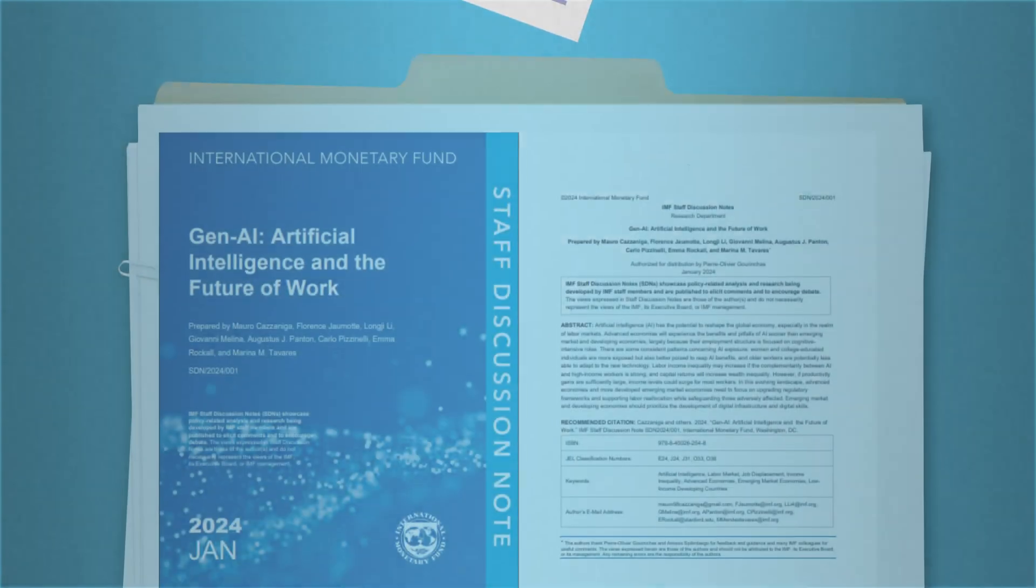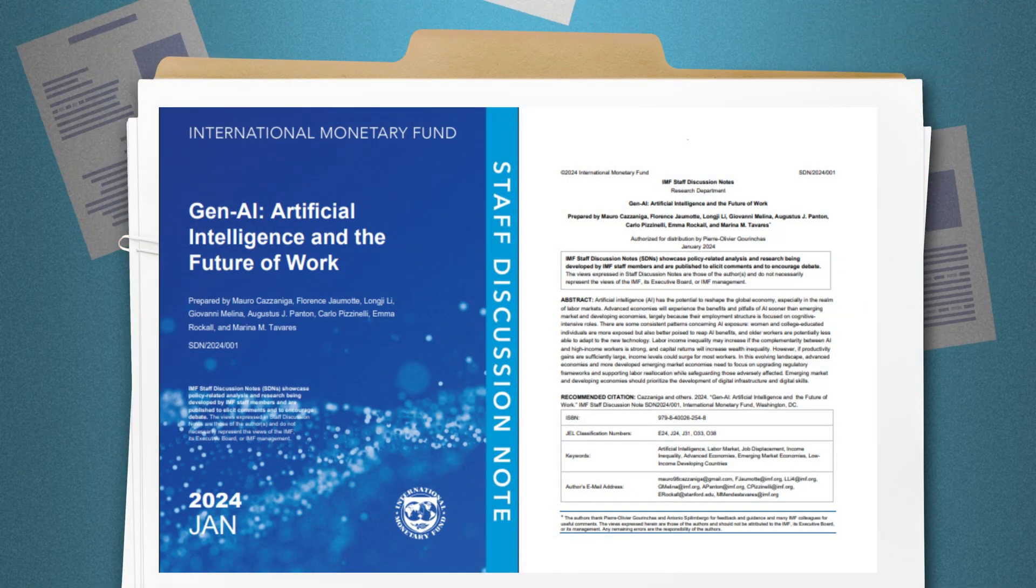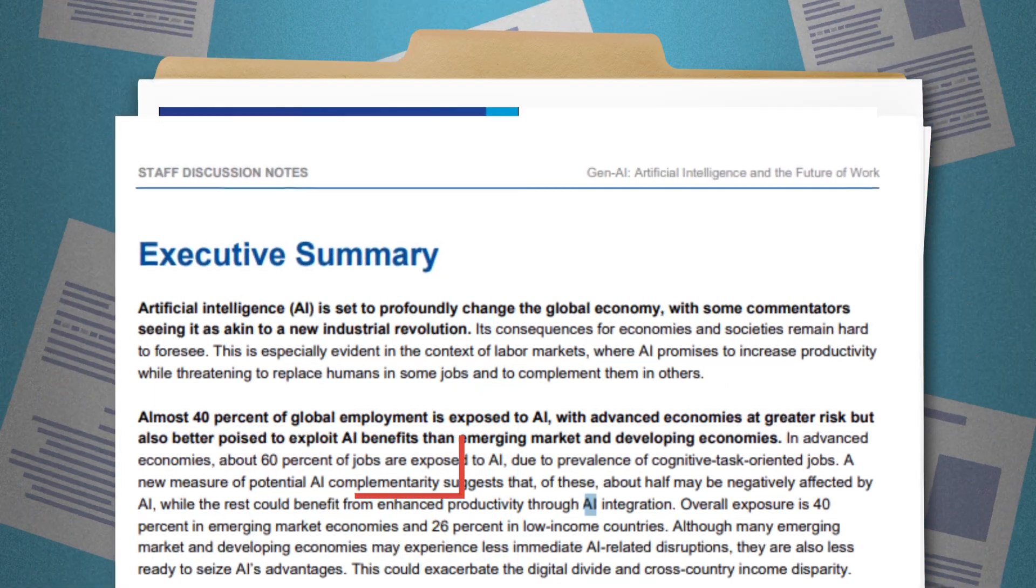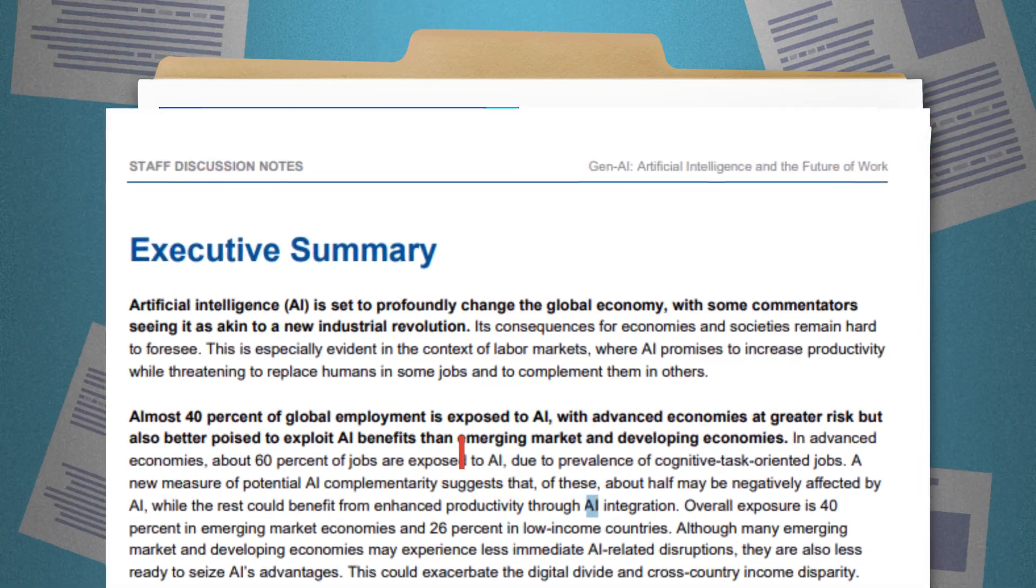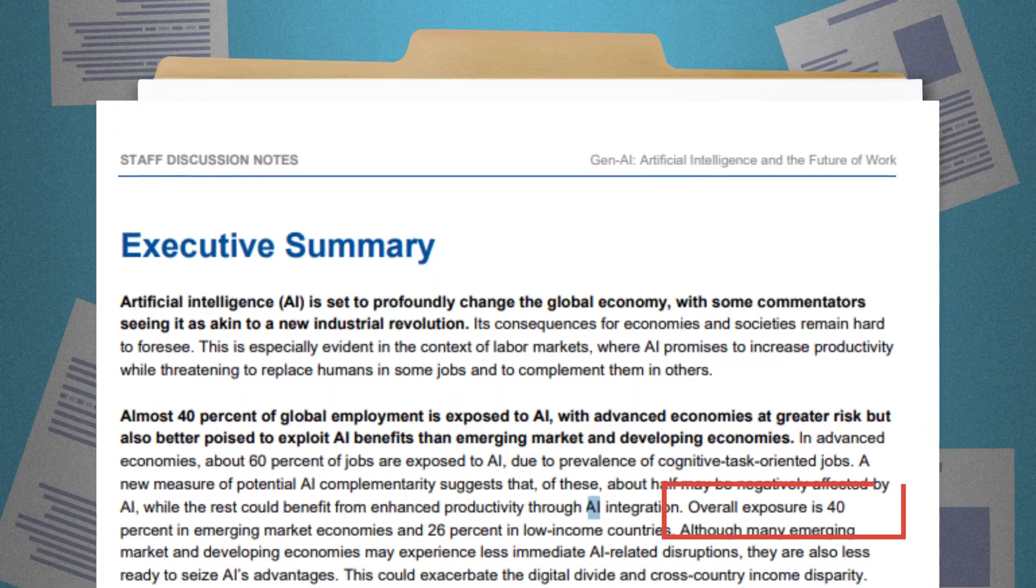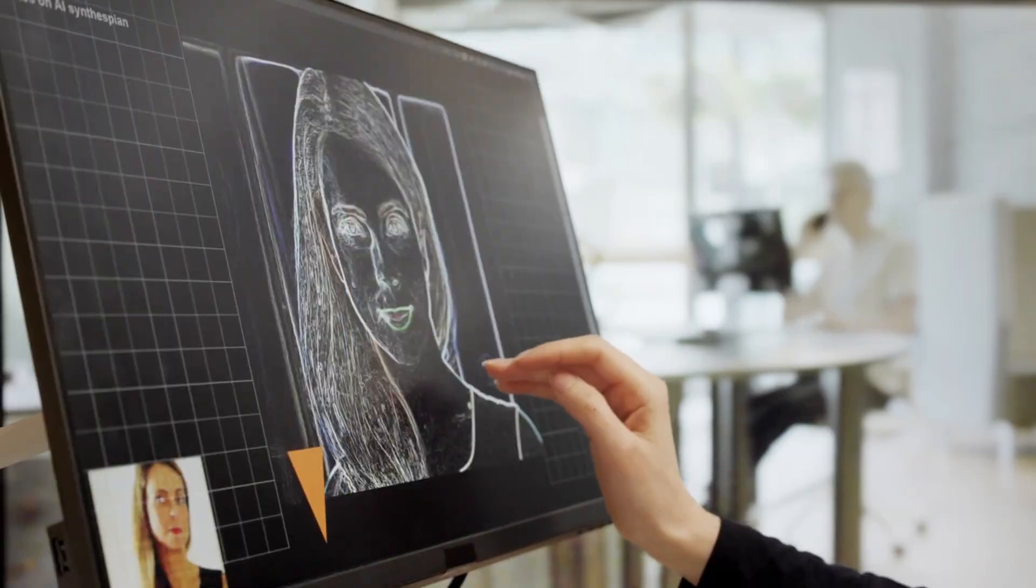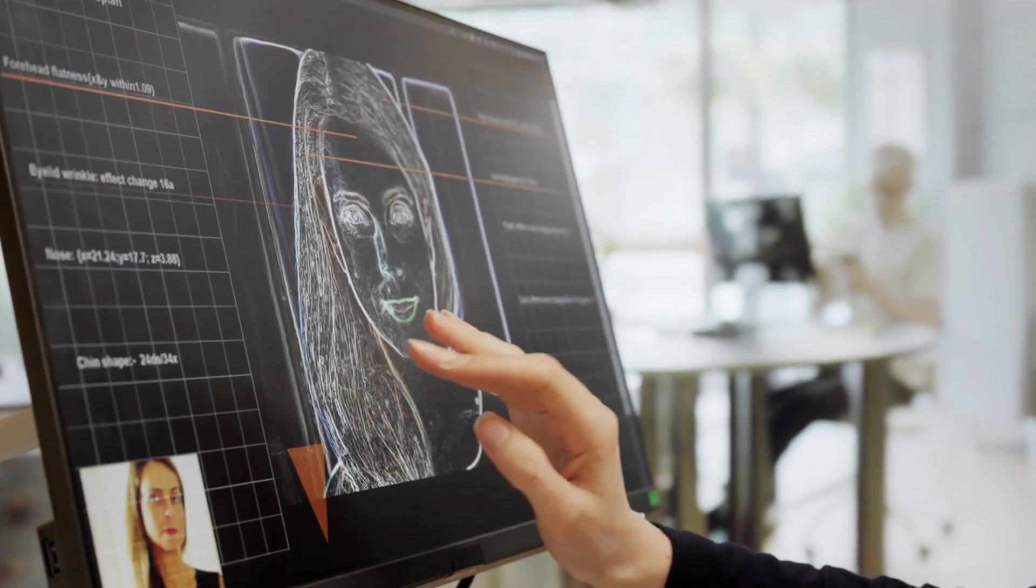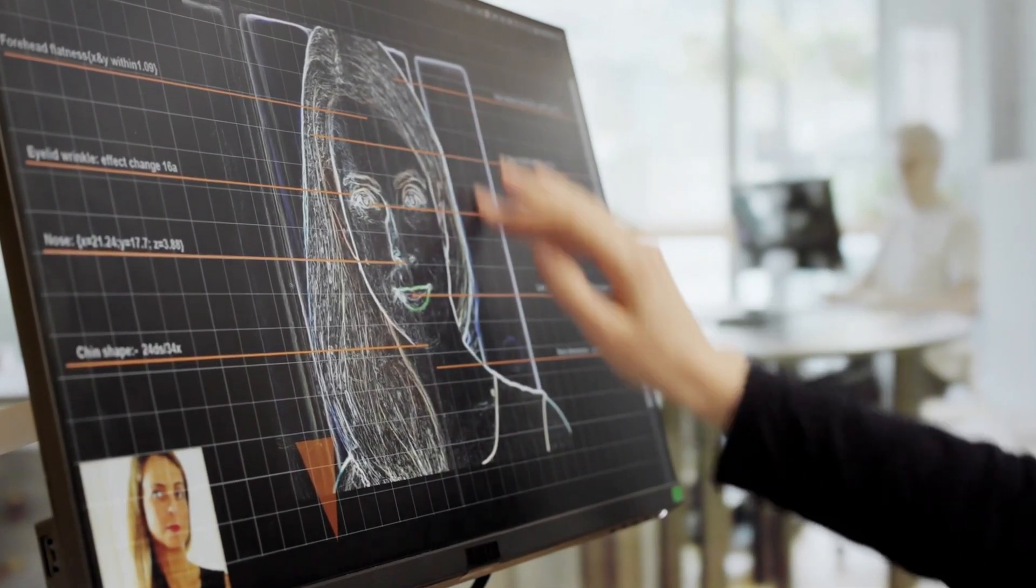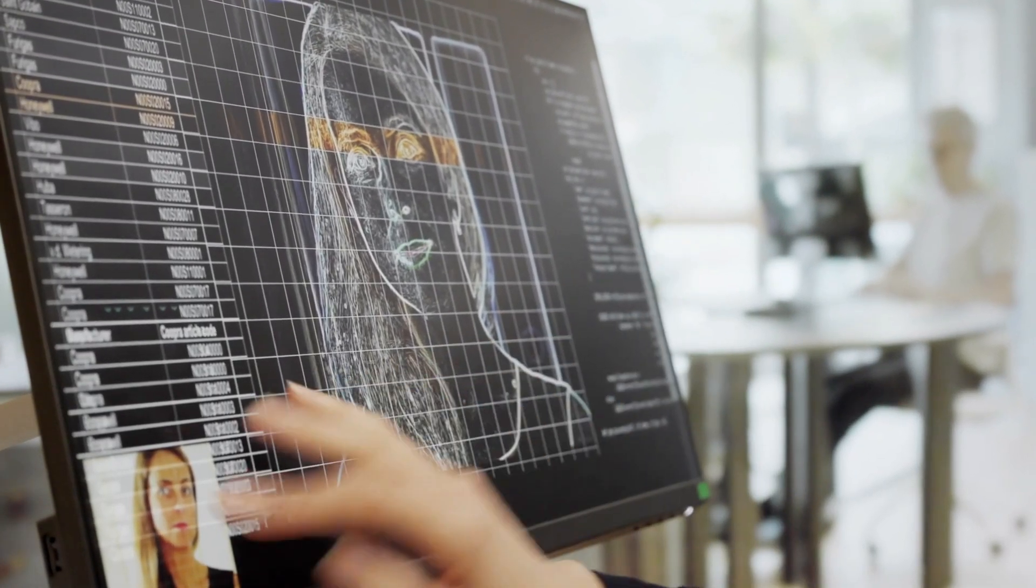According to the International Monetary Fund, 2024, about 60% of jobs in advanced economies are exposed to AI, and about 40% of jobs worldwide are exposed. Exposed means parts of those jobs can be done or sped up by AI. It doesn't automatically mean the whole job vanishes.